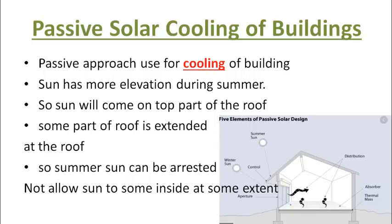In the passive approach used for cooling of buildings, the sun has more elevation during summer. So the sun will come on the top part of the roof. We will try to arrest the sun's energy by extending some part of the roof. By extending part of the roof, summer sun can be blocked and not allowed to come inside to some extent. If we look at old house architectural designs, we can find these types of extended surfaces.